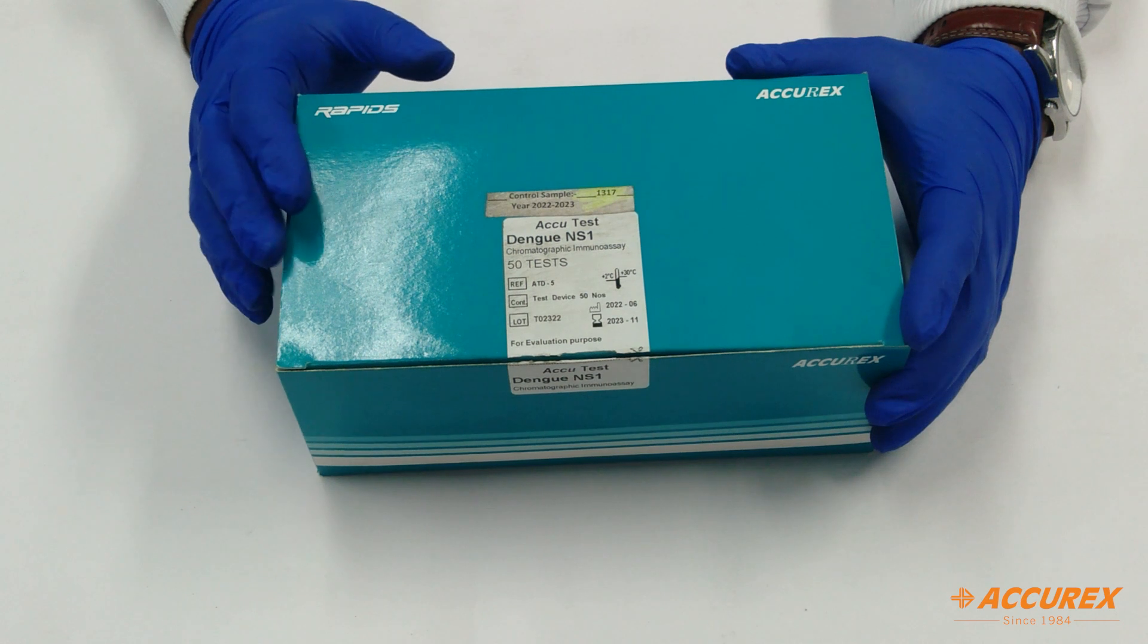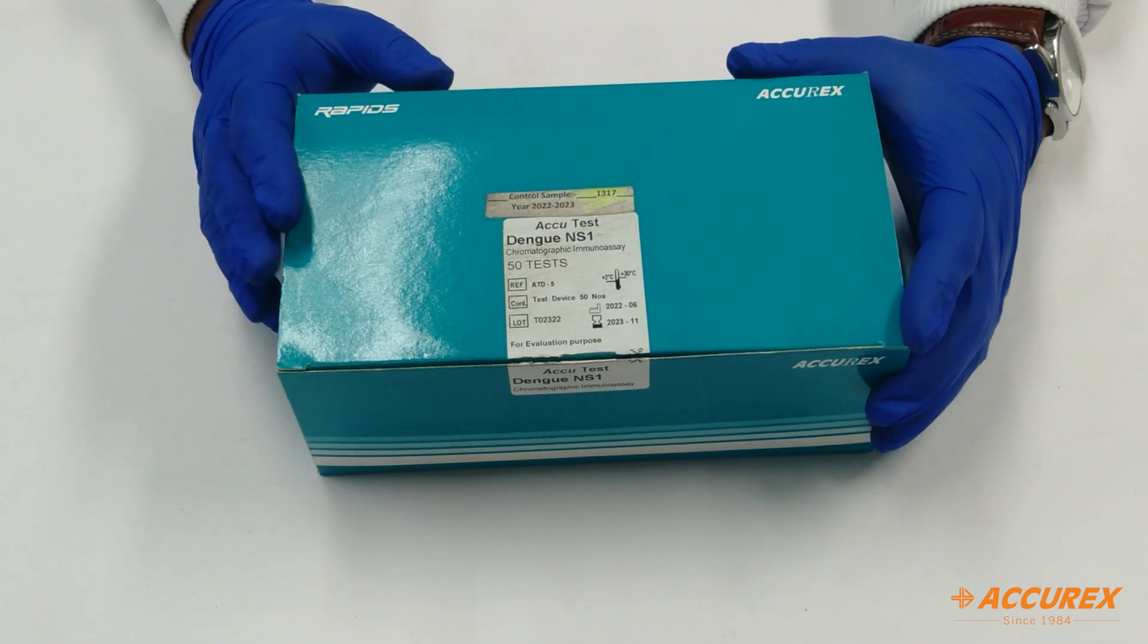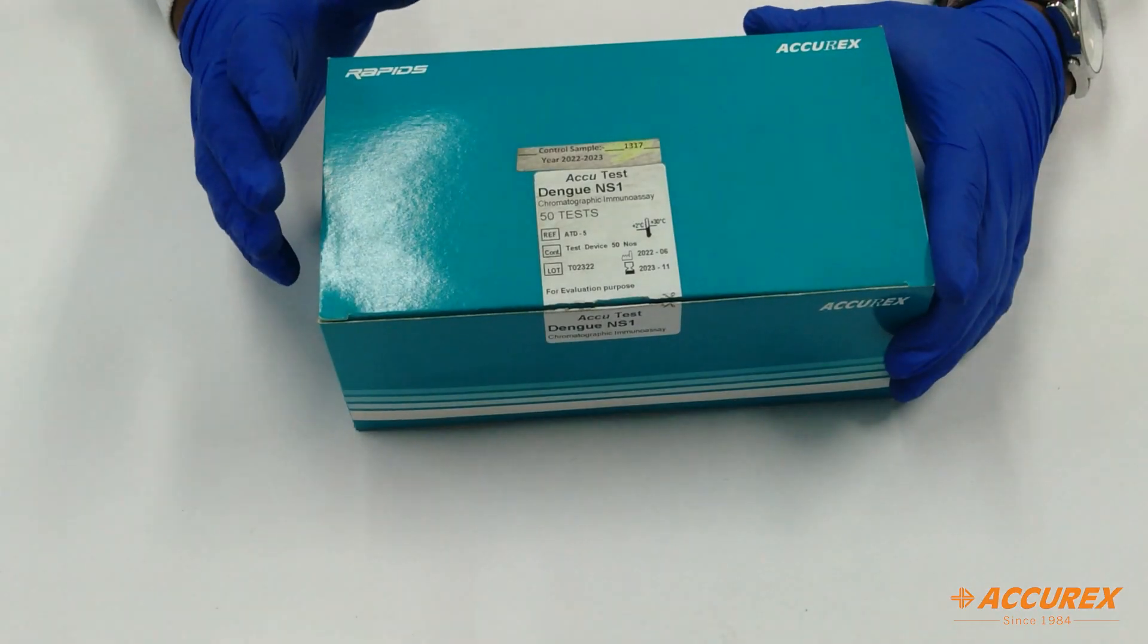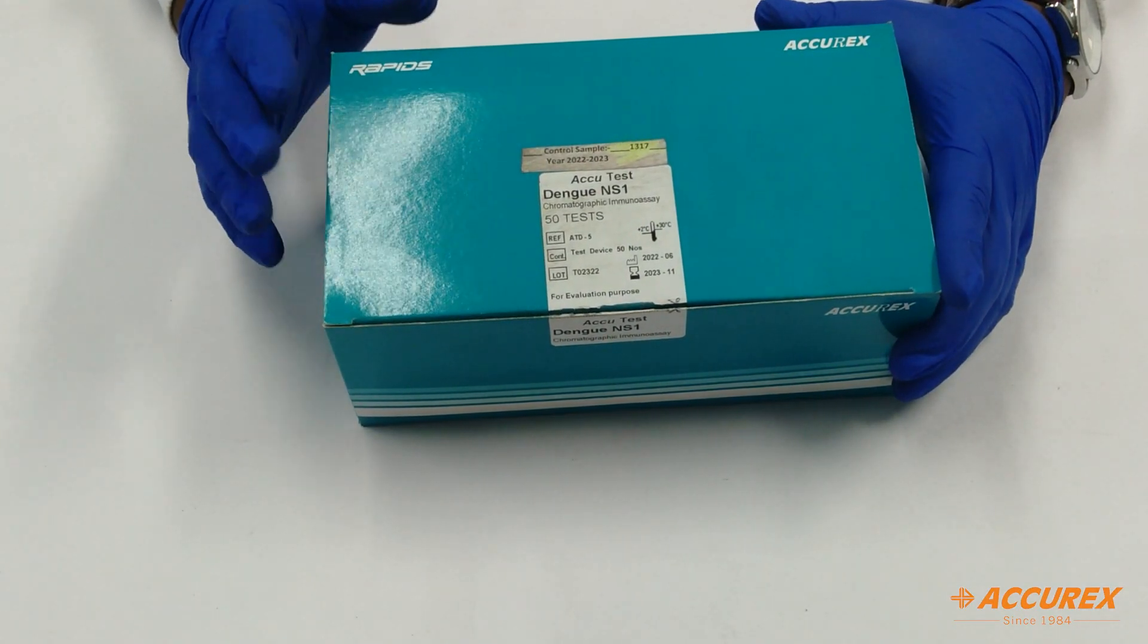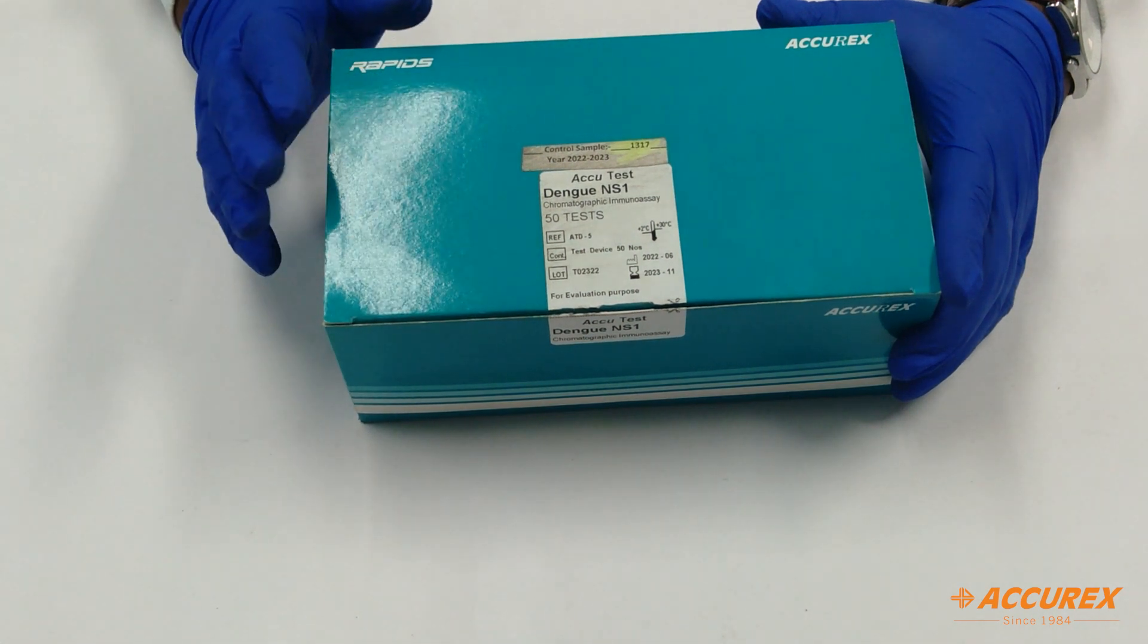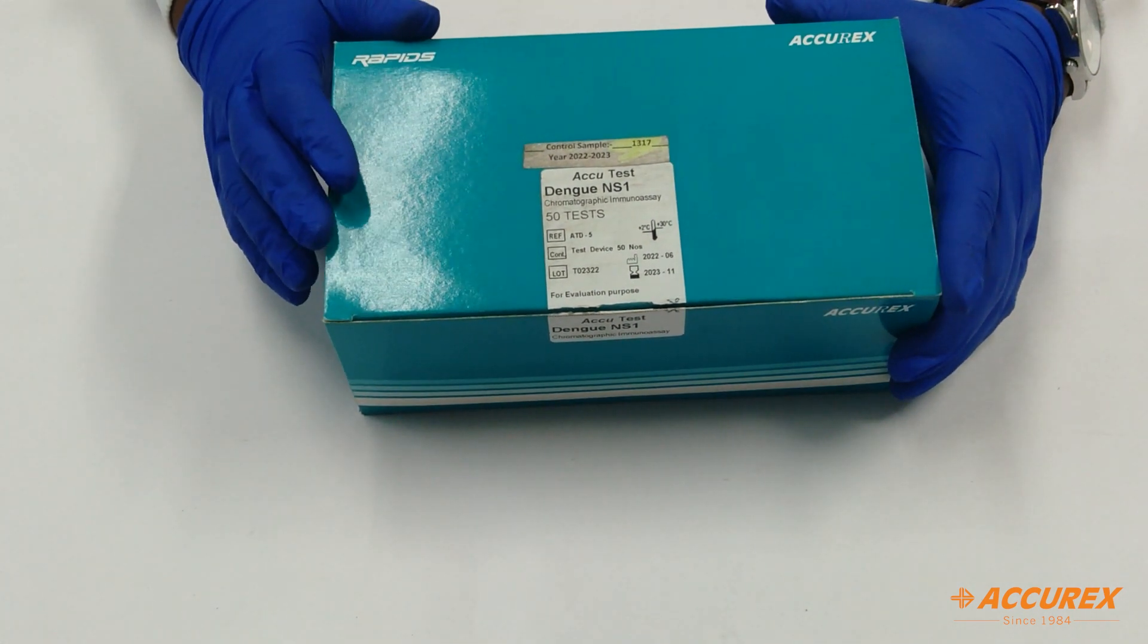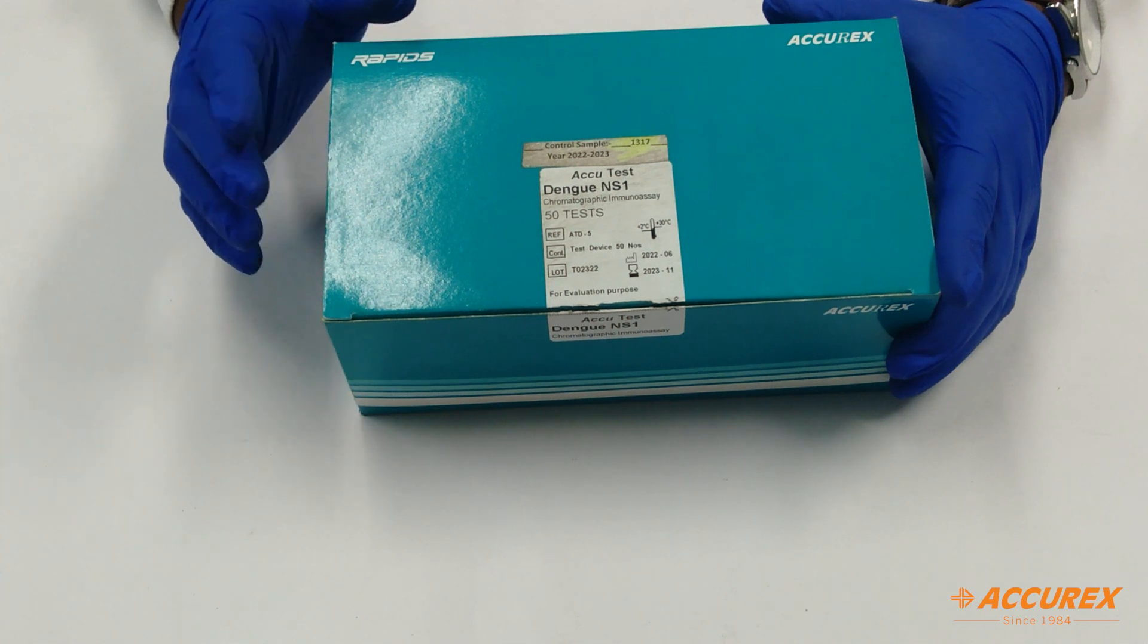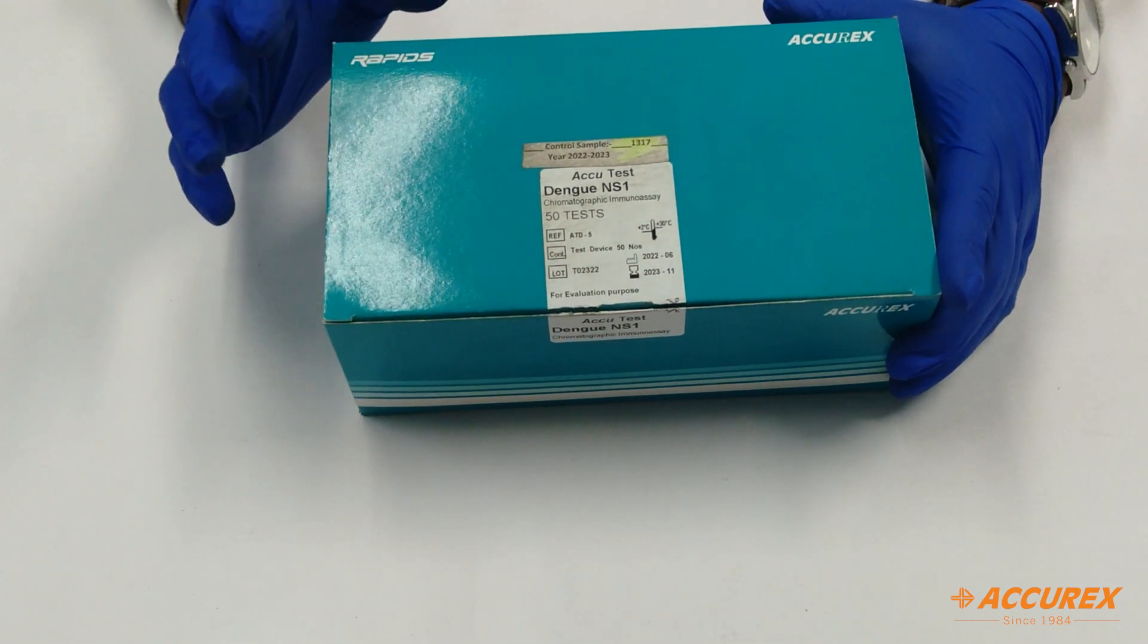For precaution and handling, you need to store this kit at 4 to 30 degrees Celsius. Make sure you don't use the kit or pouch if it is found broken, damaged, or leaking.